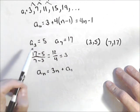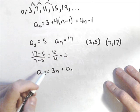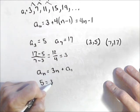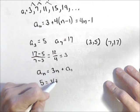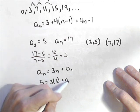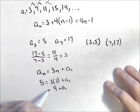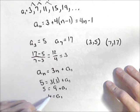We can plug in either of these. We know when n is 3, that a sub n has to be 5, so let's plug that in. So 5 equals 3 times 3 plus a sub 1, or 9 plus a sub 1 equals 5. So our first term has to be negative 4.